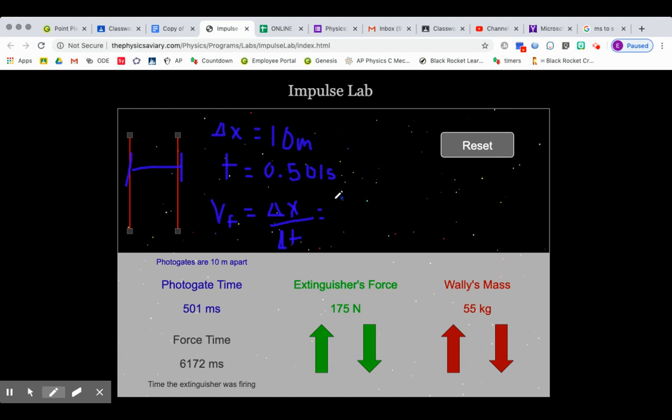So we'll have 10 meters divided by the change in time, delta t. And we get 19.96 meters per second is his final velocity.